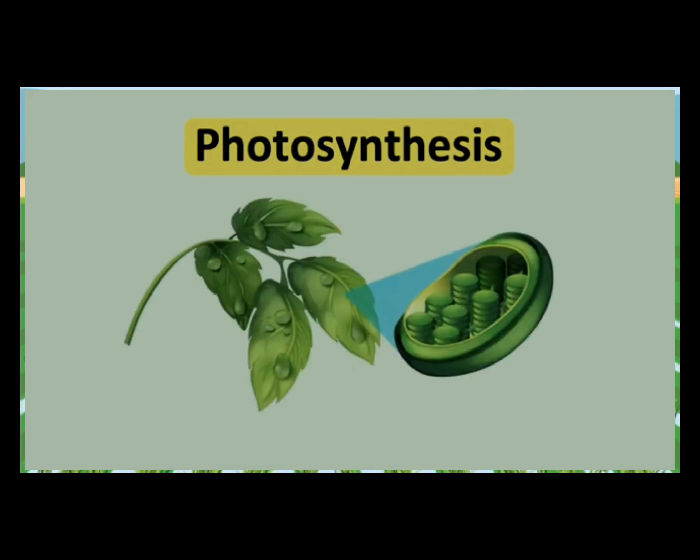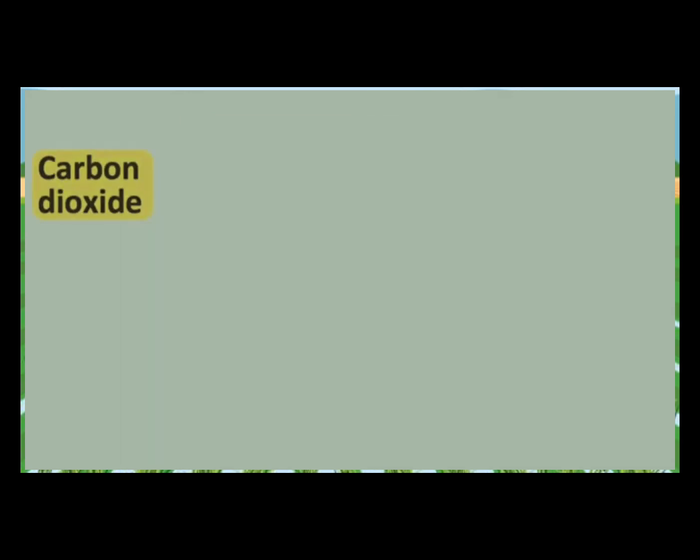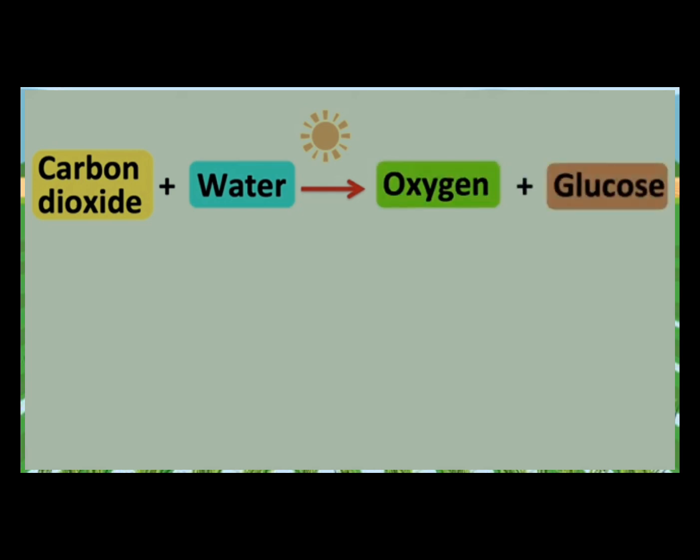Photosynthesis takes place in the leaves of plants, specifically in the chloroplasts of leaves containing chlorophyll. The equation for photosynthesis is carbon dioxide from the air, water, and light energy usually from sunlight. This reaction produces oxygen and glucose.